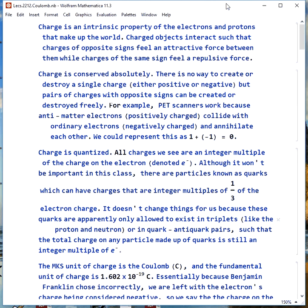The conservation of charge is absolute. There's no way to create or destroy a single charge, either positive or negative, but we could create or destroy pairs of charges with opposite signs so that the overall amount of charge is constant.